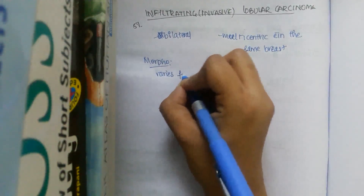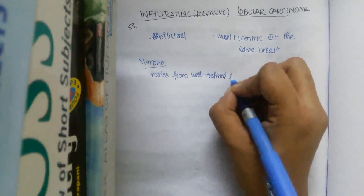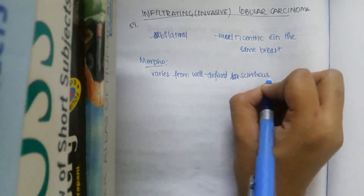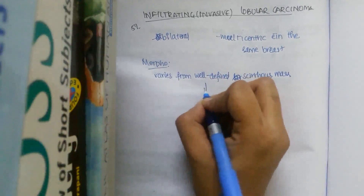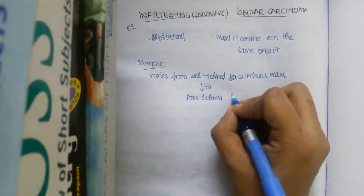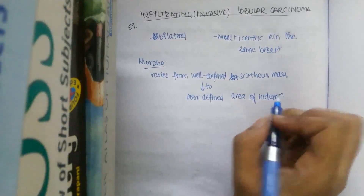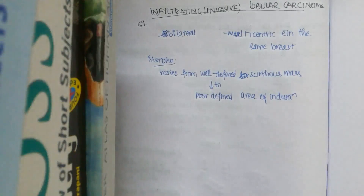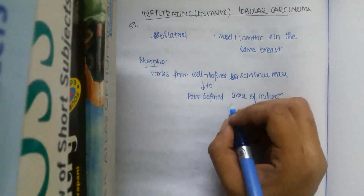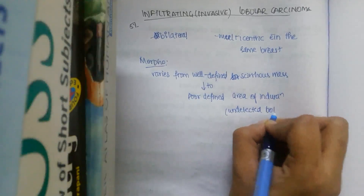Coming to the morphological features, the tumor varies across a wide range — from a well-defined scirrhous mass to a poorly defined area of induration. A well-defined mass you can see and palpate, but a poorly defined area of induration is undetected on both inspection and palpation.